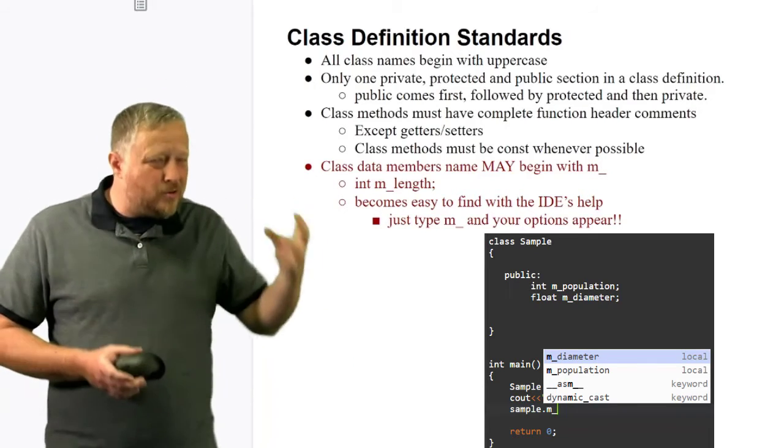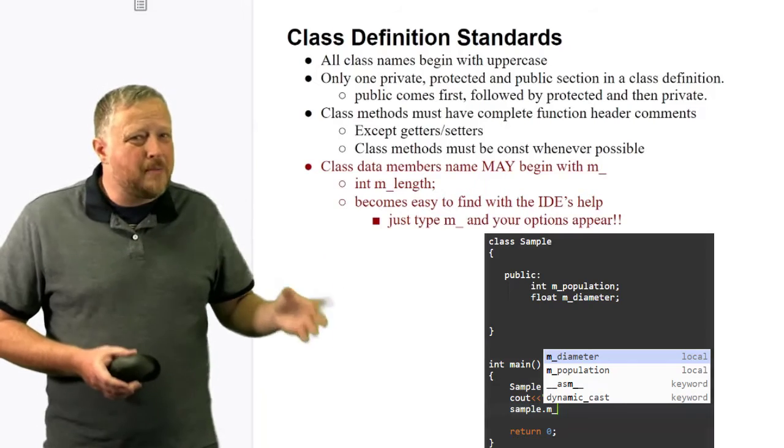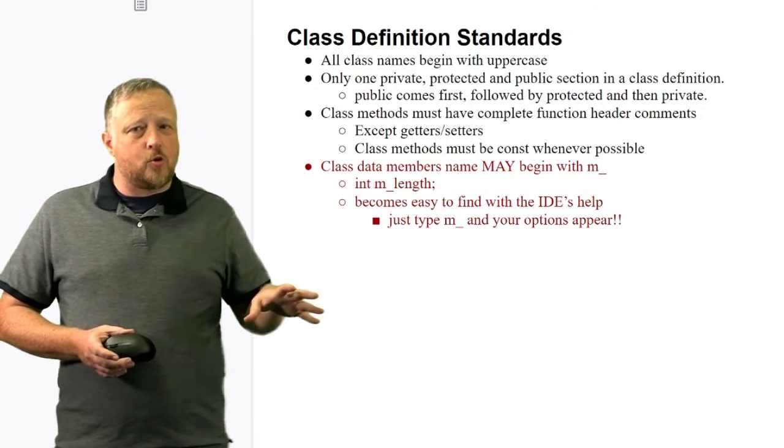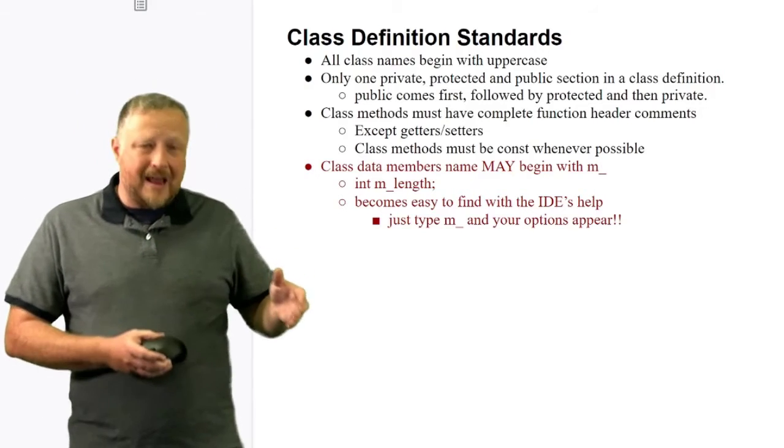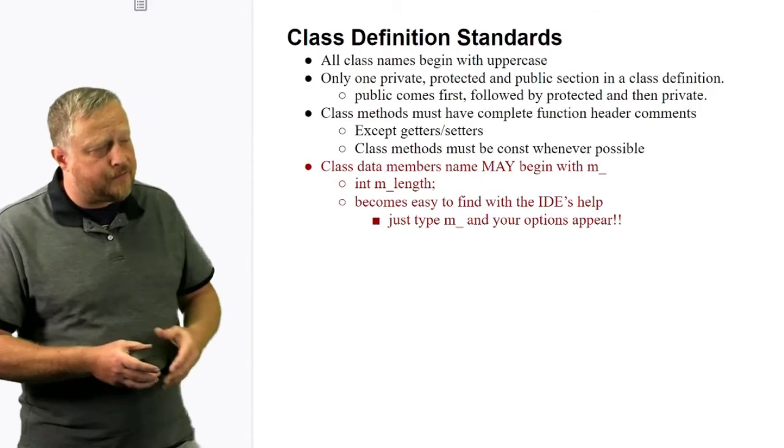Again, M underscore is a unique character set that probably is not going to show up all that often in your normal code. So that's why we do that. Use that little feature to help you out and also follow our class definition standards. Thank you very much.